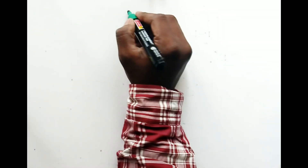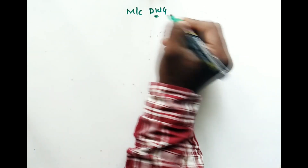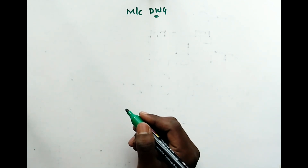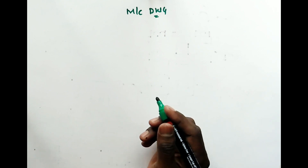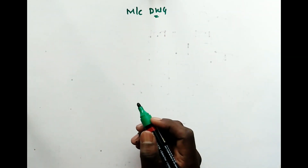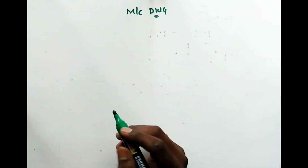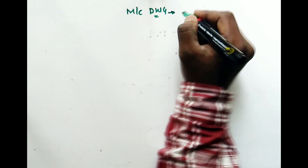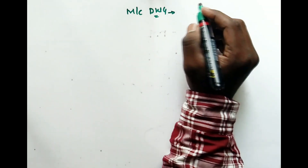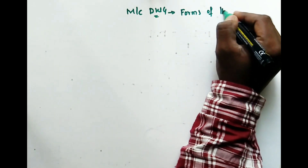Hello friends, in today's video lecture of machine drawing, we will focus on forms of threads. There are many types of threads like V-sharp, Whitworth, square thread, ACME thread, buttress thread. The specifications are standard and need to be remembered for your examination. There are many types and we will see a few.